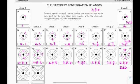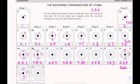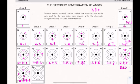Potassium has 19 electrons: the first shell holds 2, second holds 8, third holds 8 — that accounts for 18 — and the last electron goes into the fourth shell, giving 2,8,8,1. Calcium has 20 electrons: 2,8,8,2.